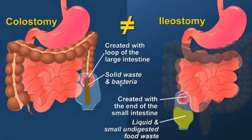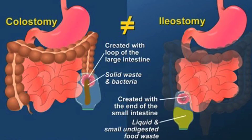An ileostomy is usually placed on the right side of the abdomen, but can also be placed on the left side in certain circumstances. A colostomy is usually placed on the left side of the abdomen, but can also be placed on the right side of the abdomen in certain circumstances.